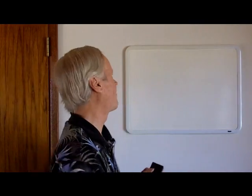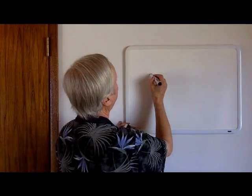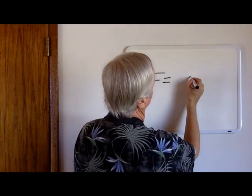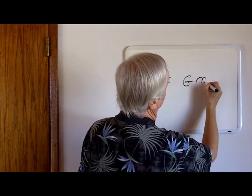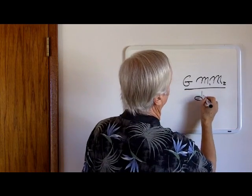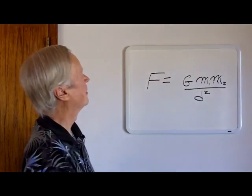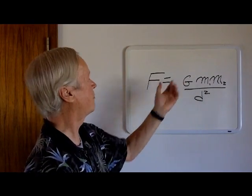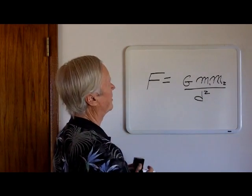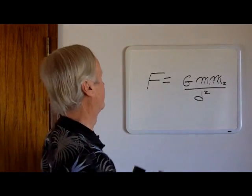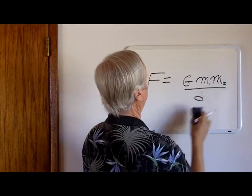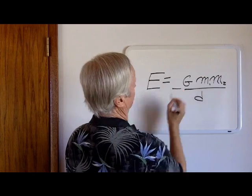So for example, we know that Newton's gravitational law is force is equal to a gravitational constant times a mass of an object times a mass of a second object divided by a distance squared. And this force law, the gravitational force law, Newton's law, can be converted to an energy law rather easily. Now we know that energy is force times distance, so if you multiply by a distance and we do the math, this becomes to the first power. This becomes energy and this actually becomes negative because gravitational energy is negative.